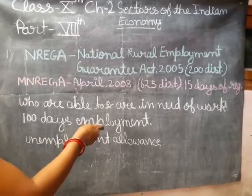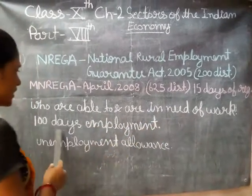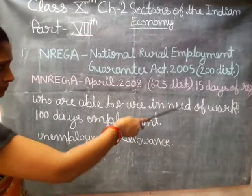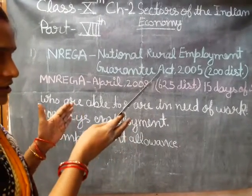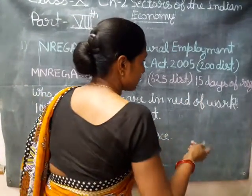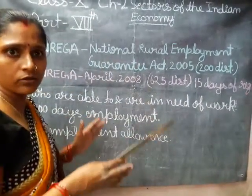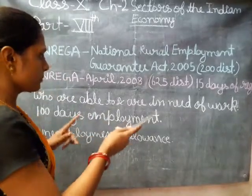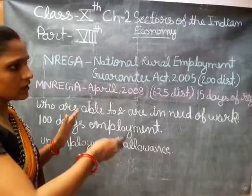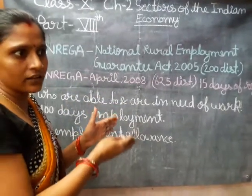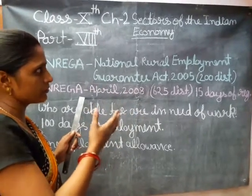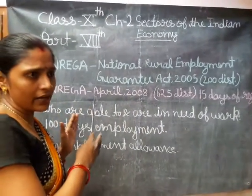Under this act, those who are able to work or are in need of work will be given 100 days of employment by the government. When they register their name, within 15 days the employment should be given to them. If the government is unable to give employment, then the government will give them unemployment allowances.